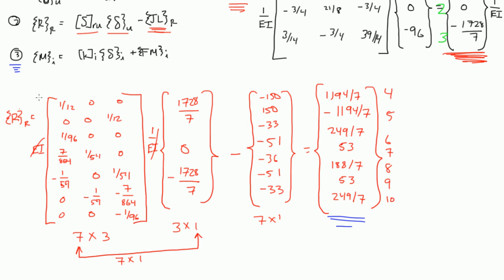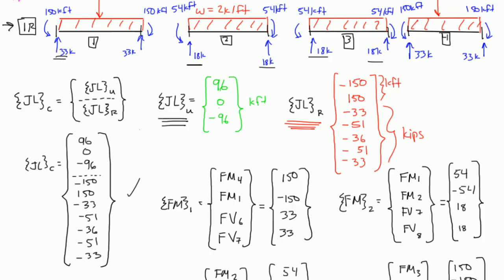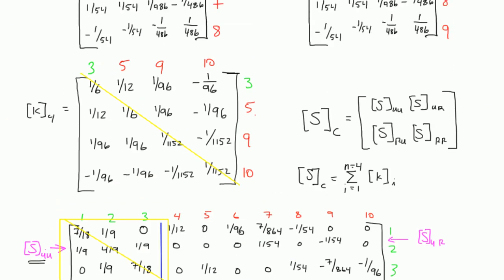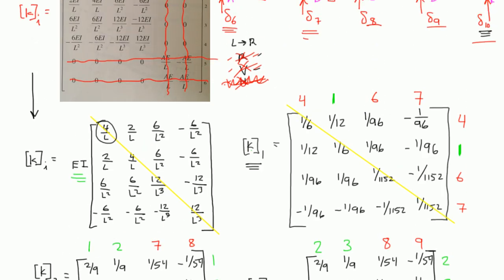Alright, welcome back. In this video we're going to look at our final equation, equation 3, which is the M sub I matrix, or column vector, is equal to your K sub I times delta sub I plus FMI. And what this gives us, this equation gives us our internal reactions that's going on in our diagram.